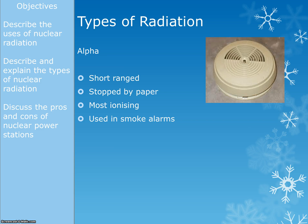Alpha is used in smoke alarms. We can use it in smoke alarms because you tend not to stand very close to a smoke alarm and it's not going to travel outside of it. Basically we use it to create an electric current — when smoke gets in the way, it stops the electric current and that starts the alarm going off.